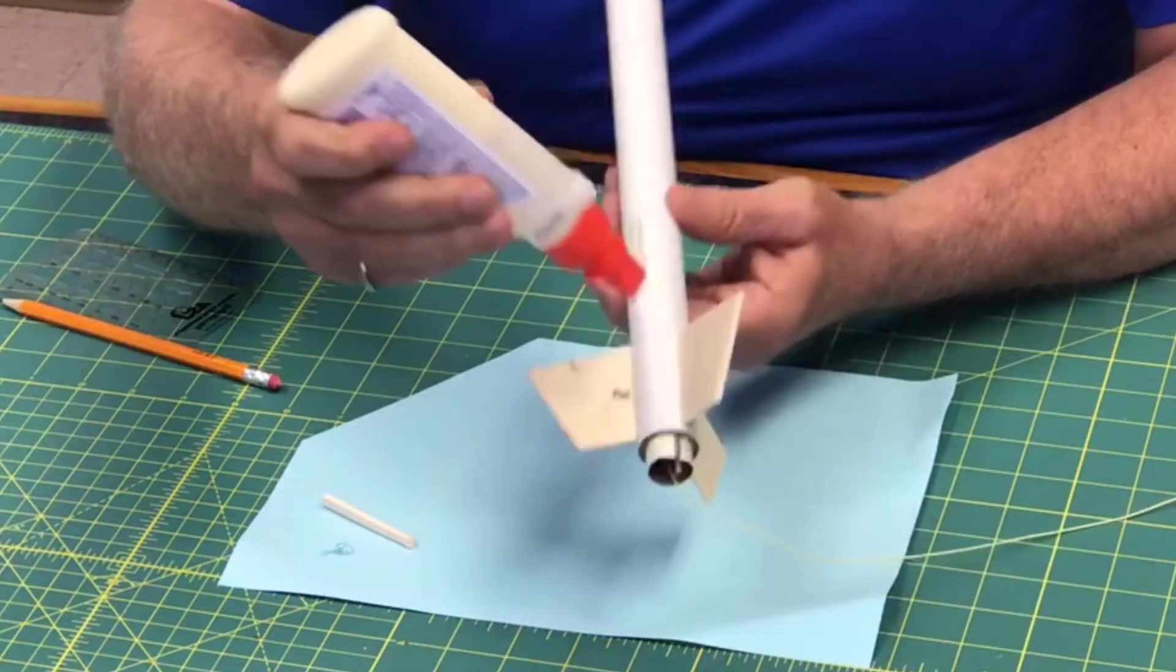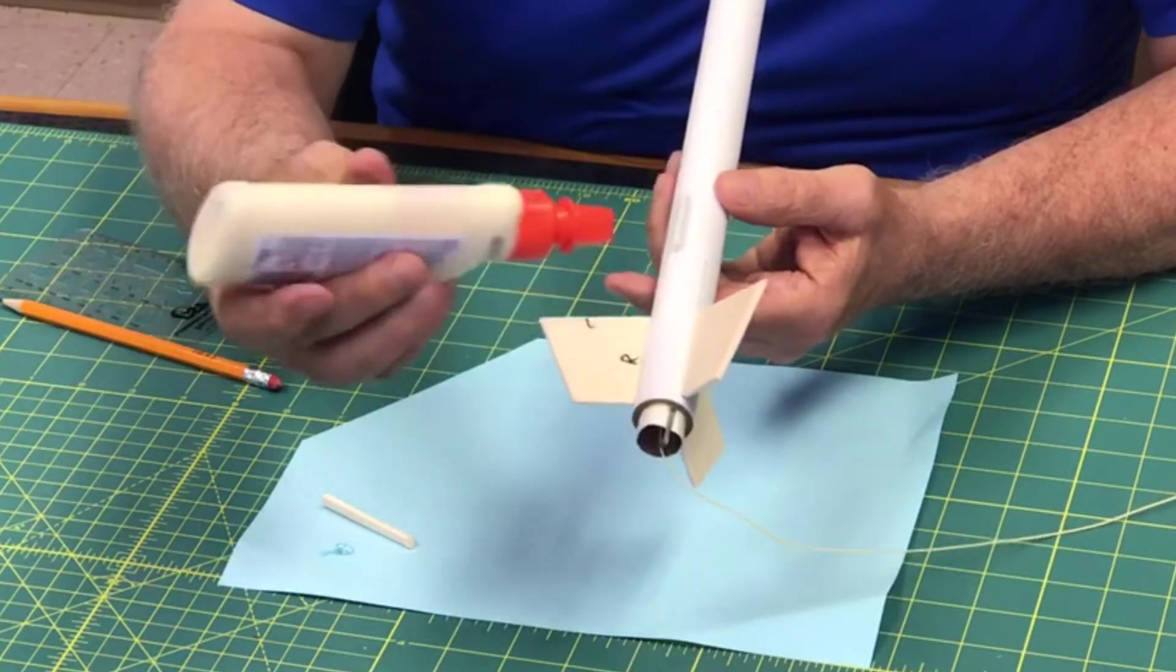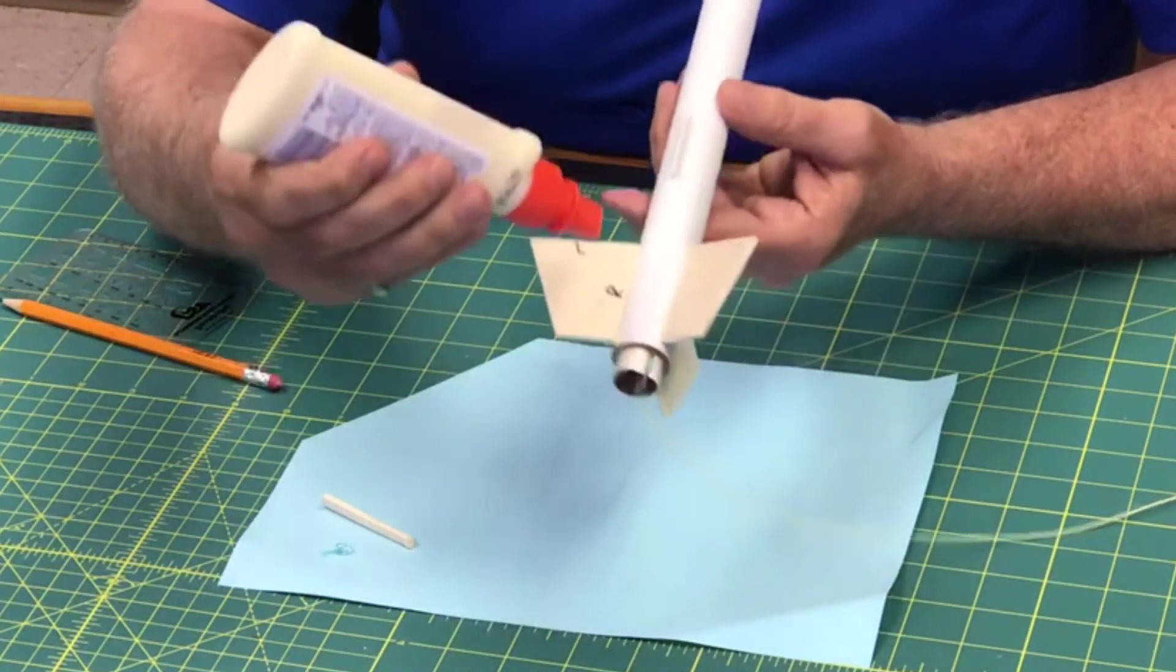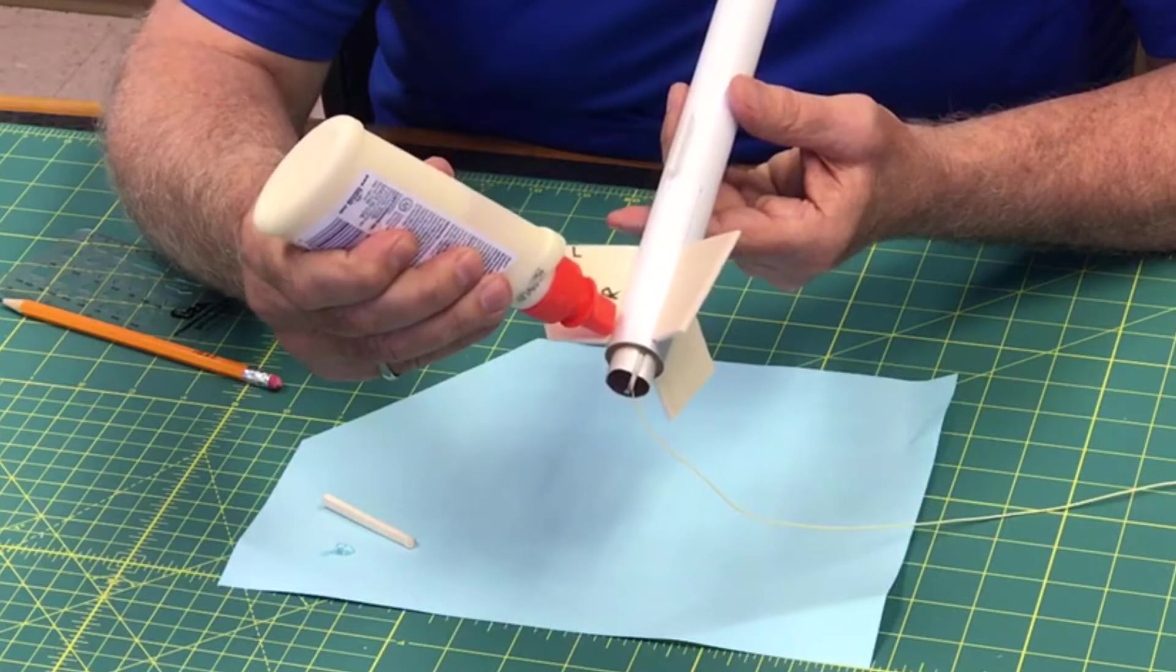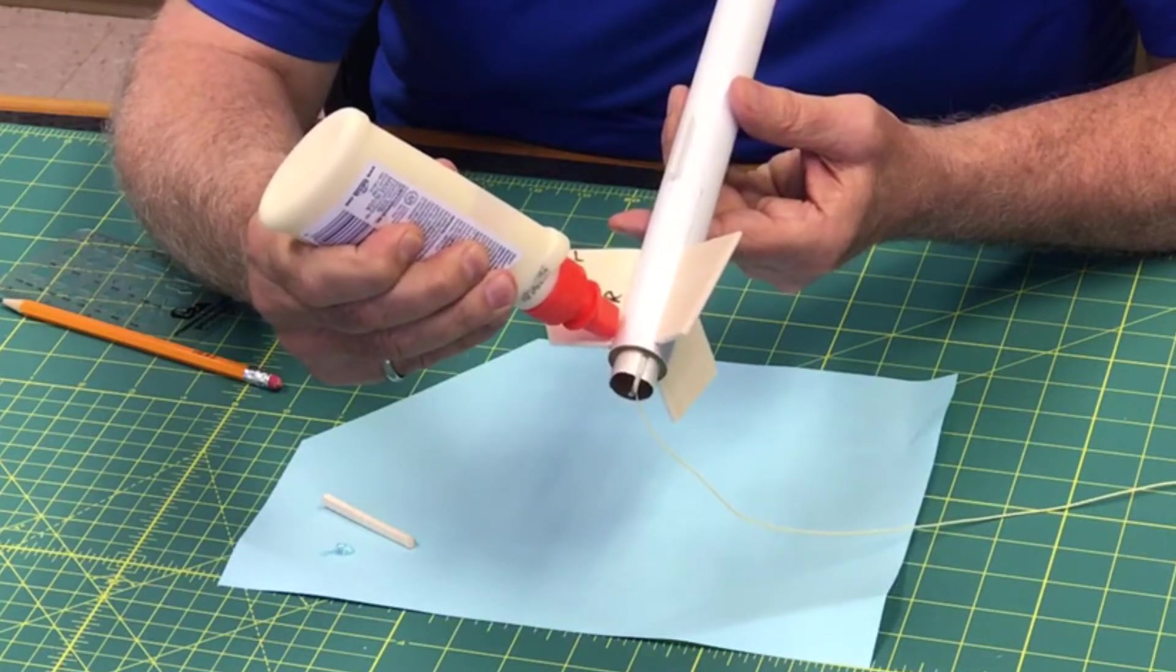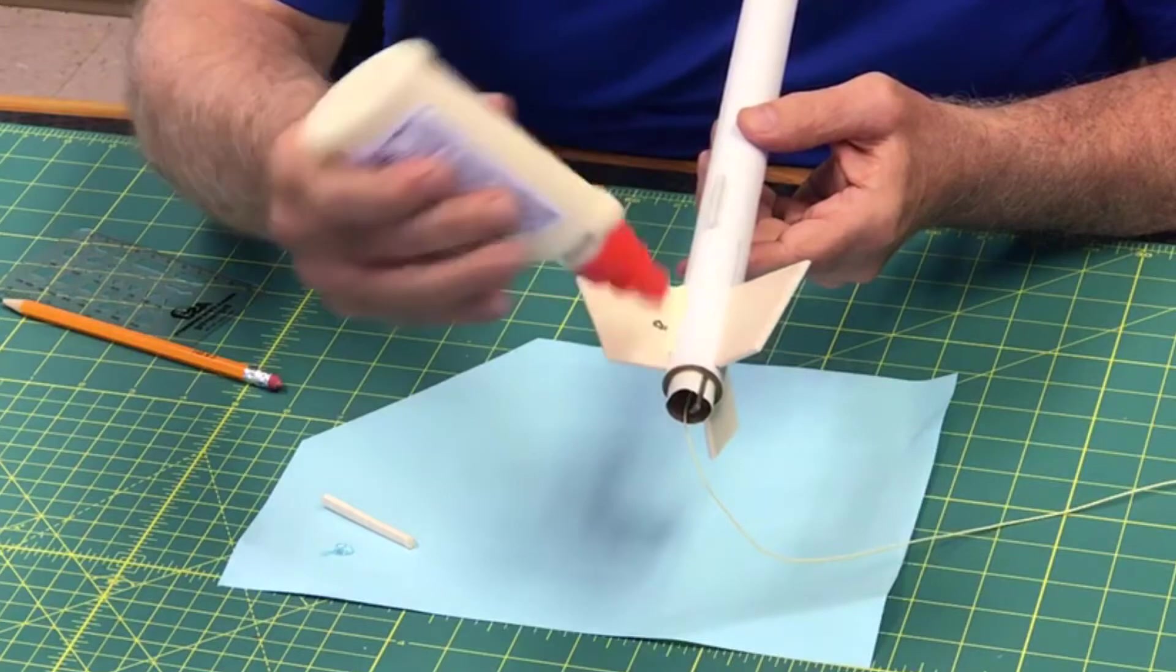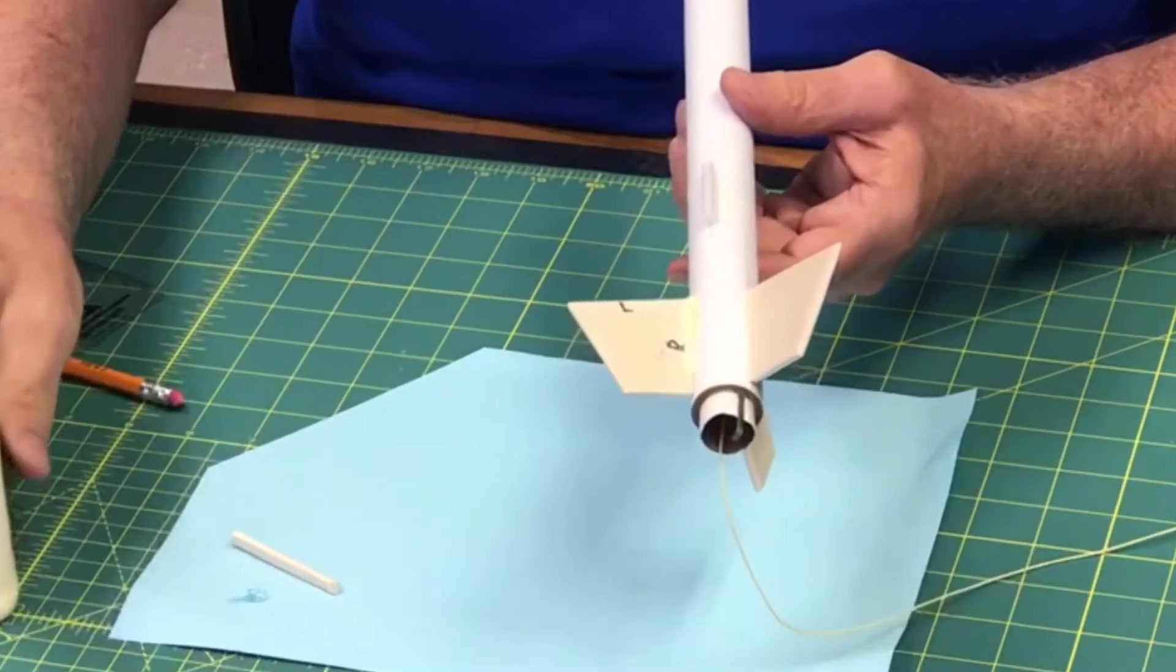We're going to just put a bead of glue down there. Don't put a big blob on there, you don't want it too big. I'm going to show you about how much to put on there. Just put a fair amount on there.